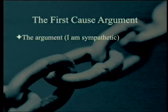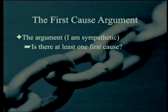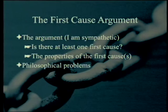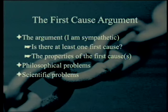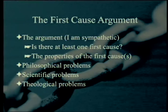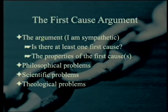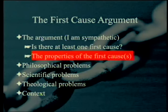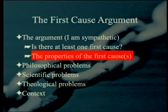We have talked about the argument to the first cause, or at least one first cause. We're going to be talking about the properties of the first cause, and then eventually we'll go into philosophical problems with the argument, scientific problems with the argument, and theological problems. This week we're going to be talking about the properties of the first cause or causes. As it turns out, one of the properties will be singularity.